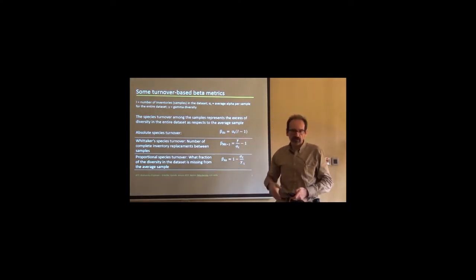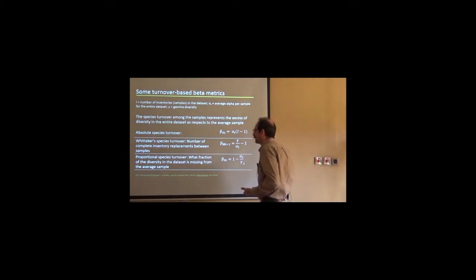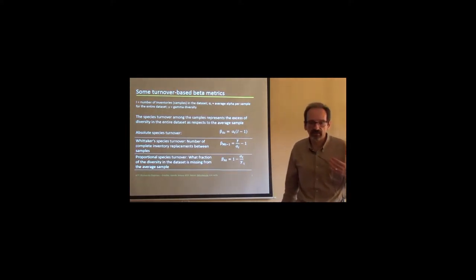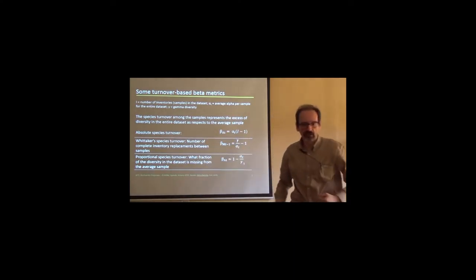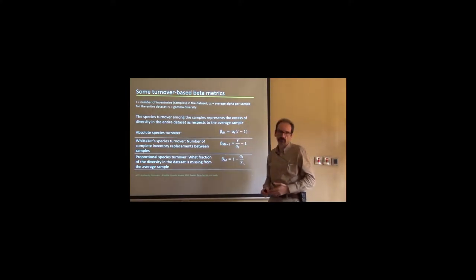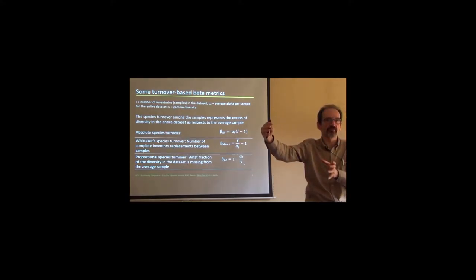Wittaker did a slightly different definition, which is the number of complete inventory replacement between samples. It's basically the quotient between gamma and alpha. So, he didn't make it additive. Basically, it's a standardization. It's a turnover rate. How many times your species have been changed by other species. And there's also a proportional species turnover. What fraction of the diversity of the dataset is missing from the average sample? I have an average sample, and I'm missing a lot of diversity. How much am I missing? That's the proportion of species turnover.